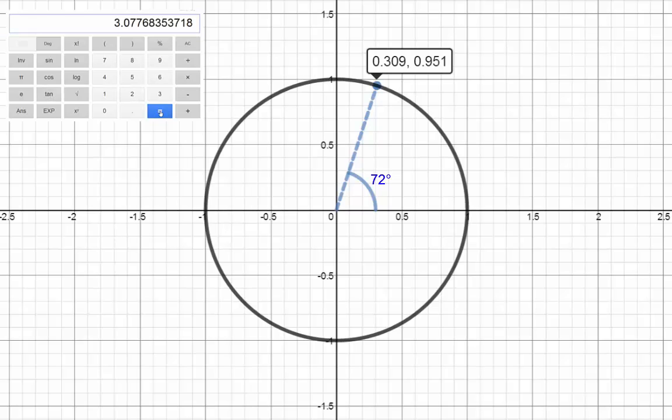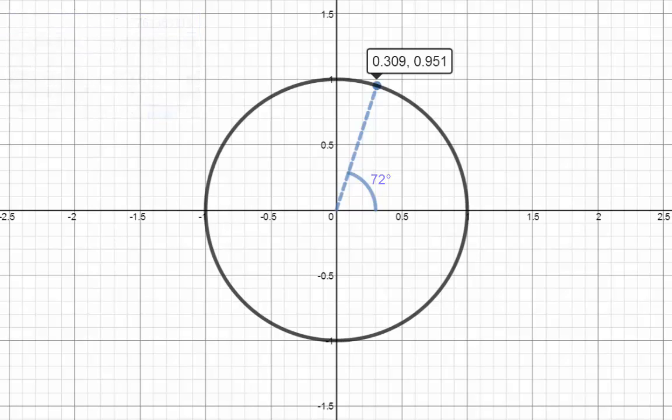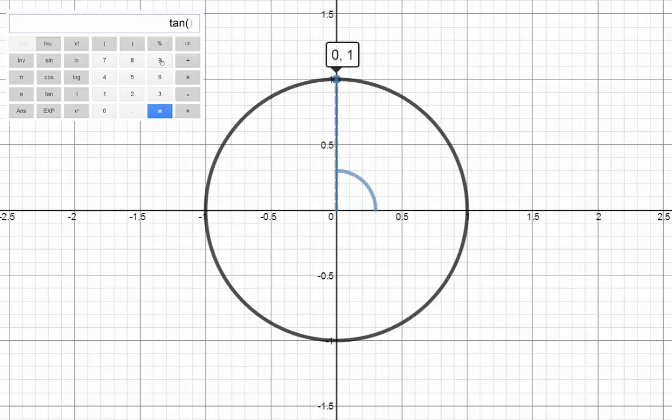As you get closer to 90 degrees, the line gets steeper and steeper, and at 90 degrees, it's a vertical line, so it has an undefined gradient. Therefore, tan 90 degrees is undefined.